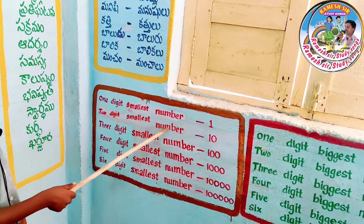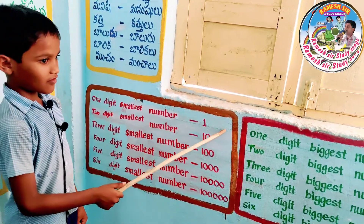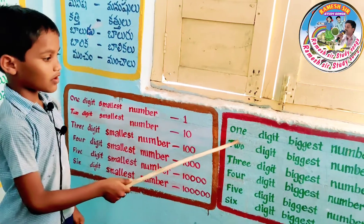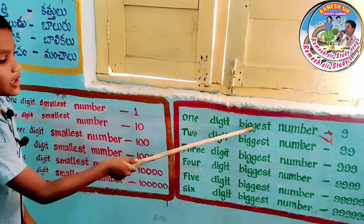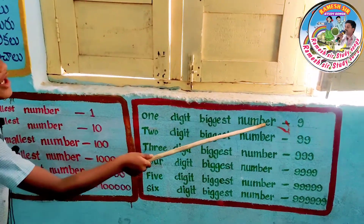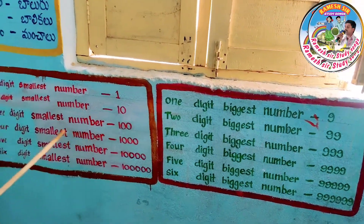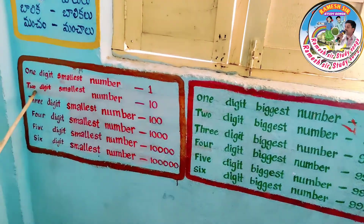One digit smallest number: one. One digit biggest number: nine.